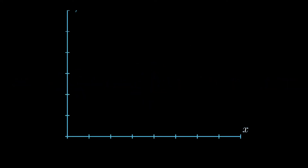Let's say we have a bunch of points and we want to find a regression line that best fits the data. If we take a moment and just look at the points visually, we can find a straight line that looks something like this.